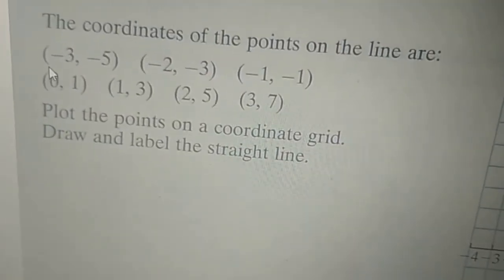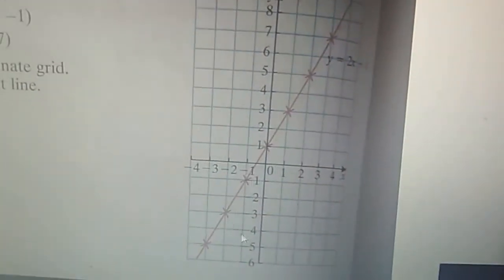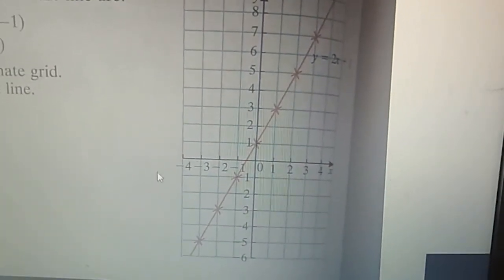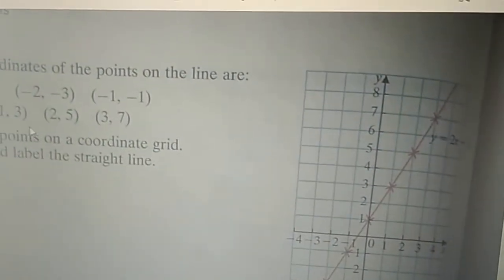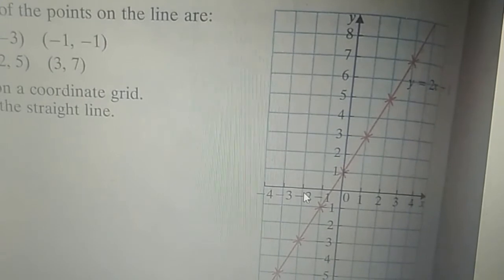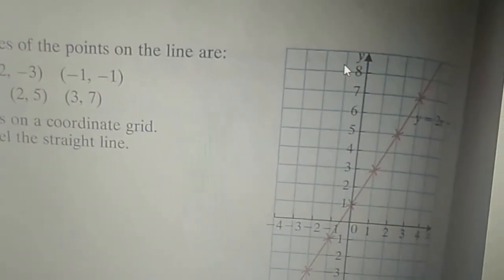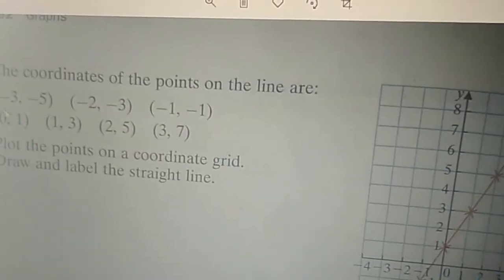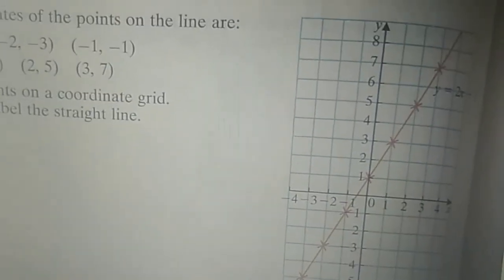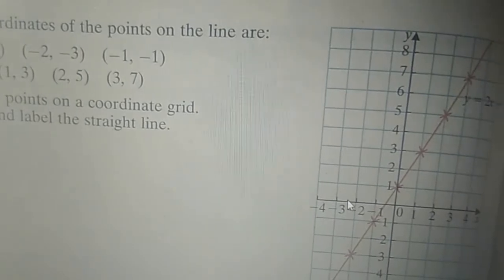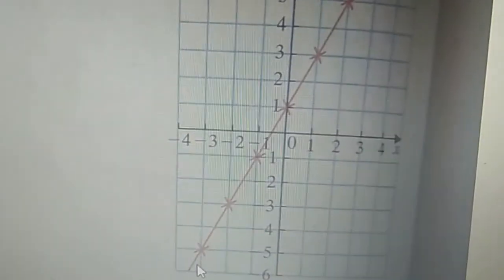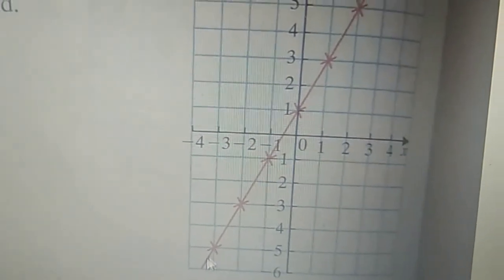The first coordinate is minus 3, so we find minus 3 on the x-axis in the negative sector. The second coordinate is minus 5, so on the y-axis minus 5 is here. So the point minus 3, minus 5 is located where those two values meet, and they have put a cross mark denoting that coordinate.